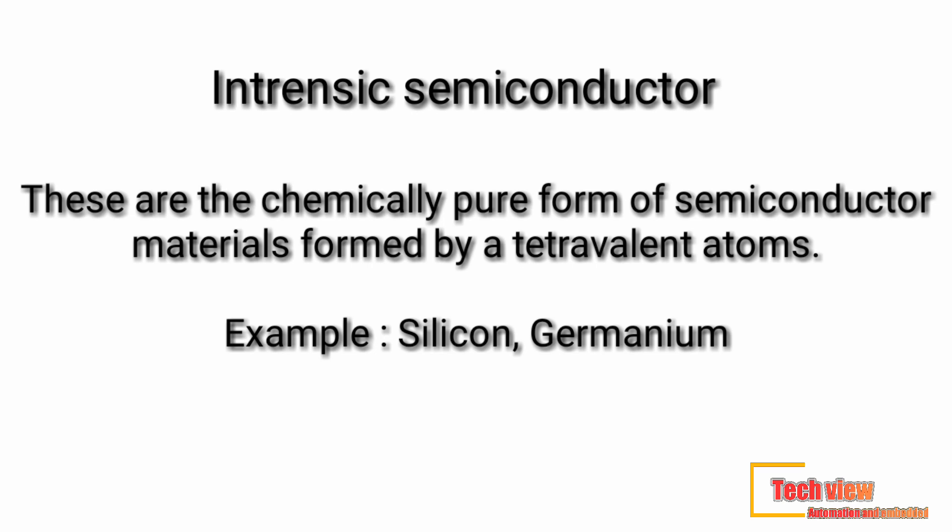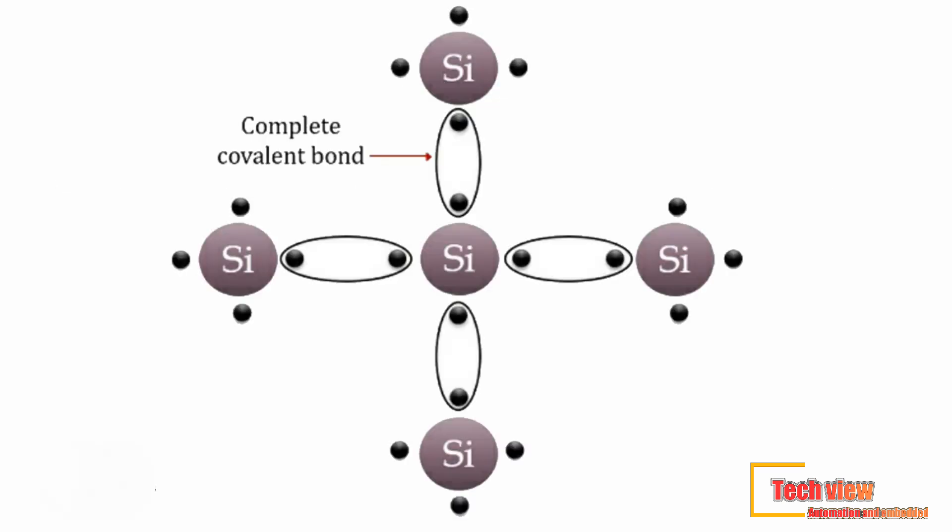To understand the phenomenon of conduction of current in a semiconductor, it is necessary to study its crystal structure. Here is shown a simplified two-dimensional representation of the crystalline structure of a semiconductor. The core represents the nucleus and all the orbiting electrons except the valence electrons. Each of the four valence electrons takes part in forming covalent bonds with the four neighboring atoms.